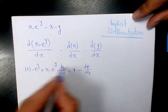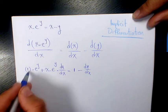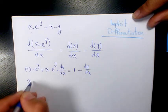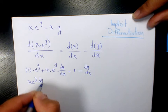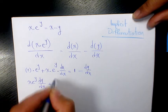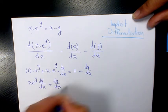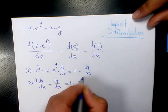So I can move this one to the left hand side and move this part to the right hand side. It's going to be x·e^y·dy/dx plus dy/dx equals 1 minus e to the power of y.